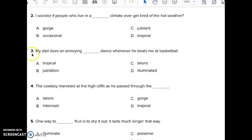Question 3. My dad does an annoying blank dance whenever he beats me at basketball. A: Tropical. B: Jubilation. C: Talons. D: Illuminated.